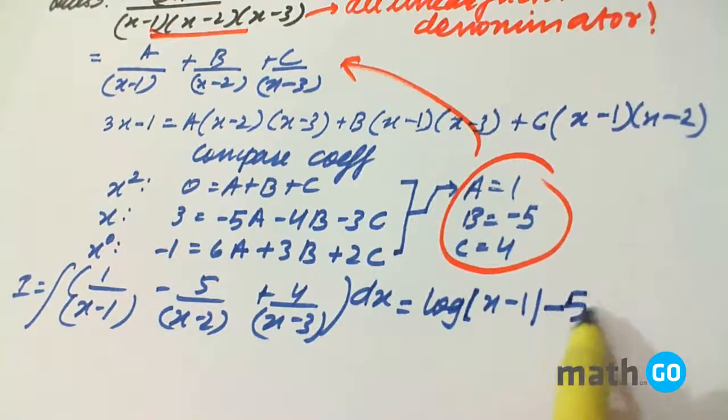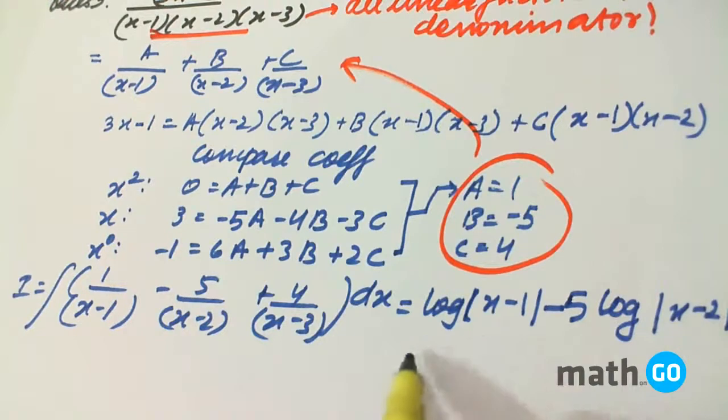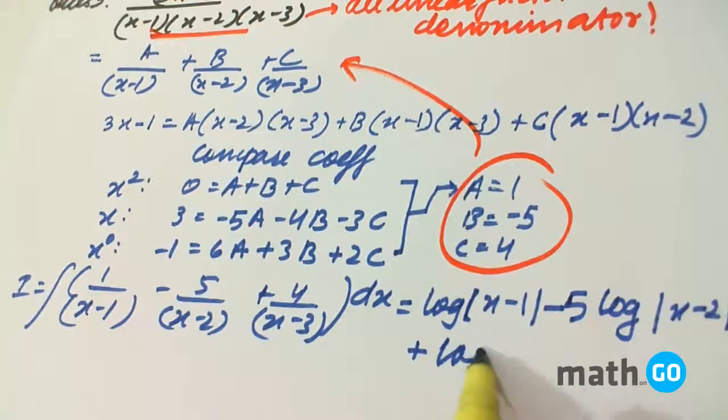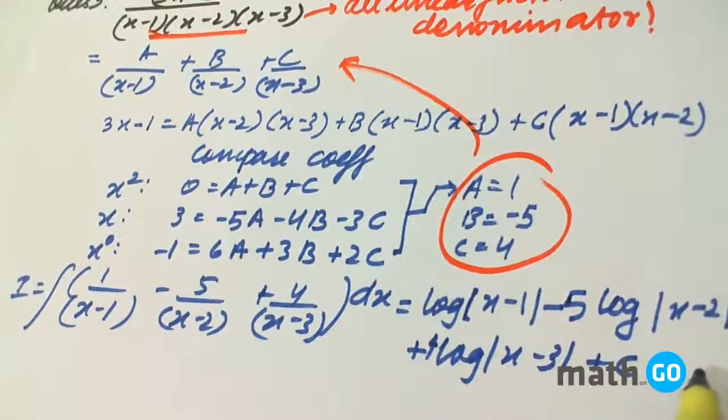Minus 5 log of mod of x-2 plus log of mod of x-3 into 4 plus C, which is our answer.